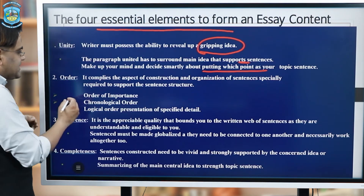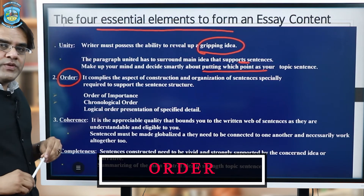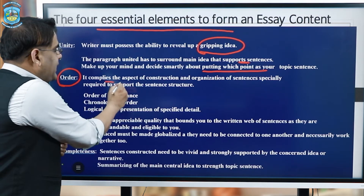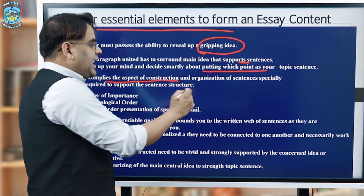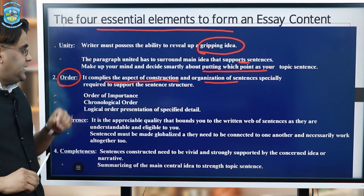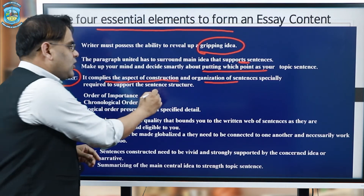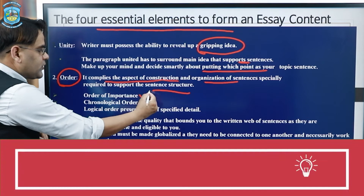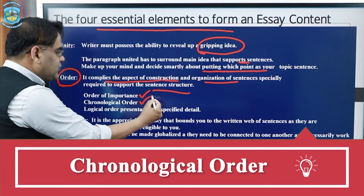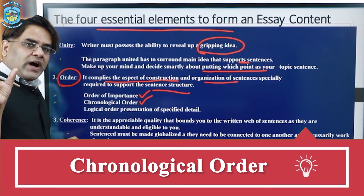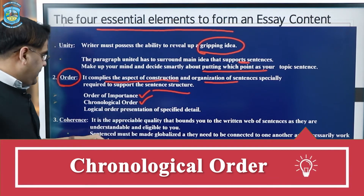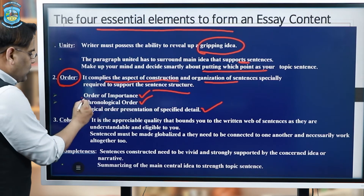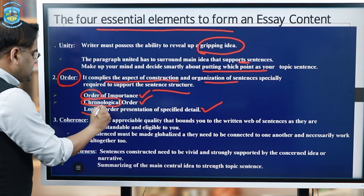Now comes the order in which words need to be taken for further line structuring. Order means to comply with the different aspects of sentence construction and the way sentences need to be organized, especially to support the overall sentence structure of the paragraph. There are three things: first comes the order of importance, second comes chronology — everything needs to be arranged in a proper way — and then comes the logical order and presentation of specific detail.